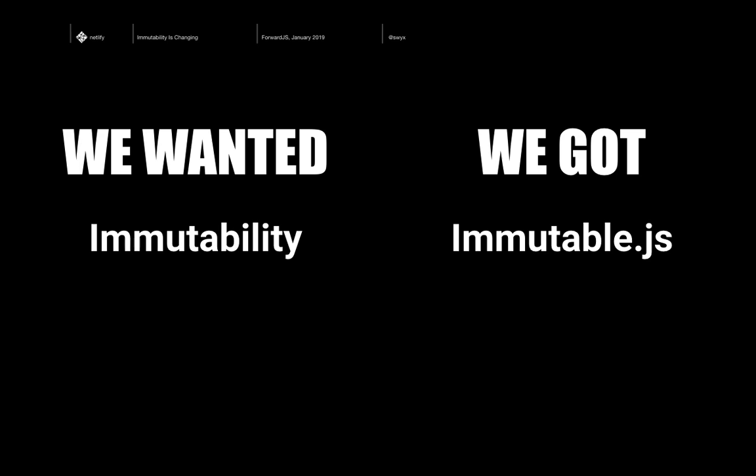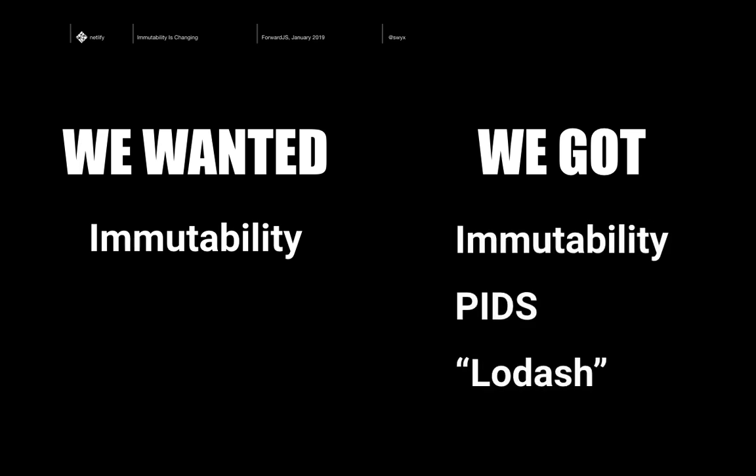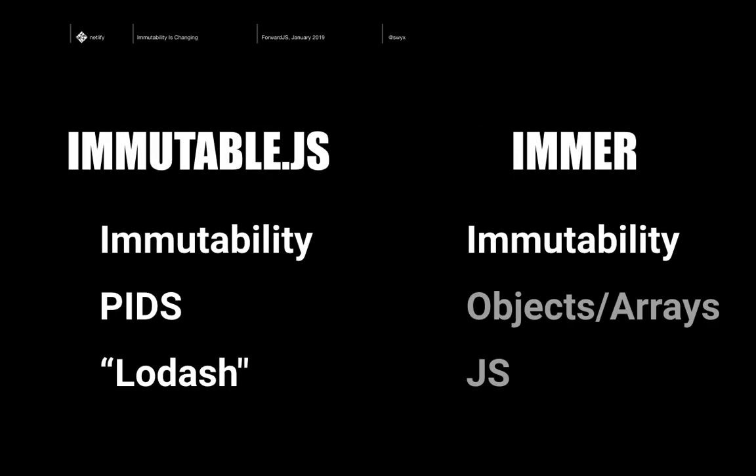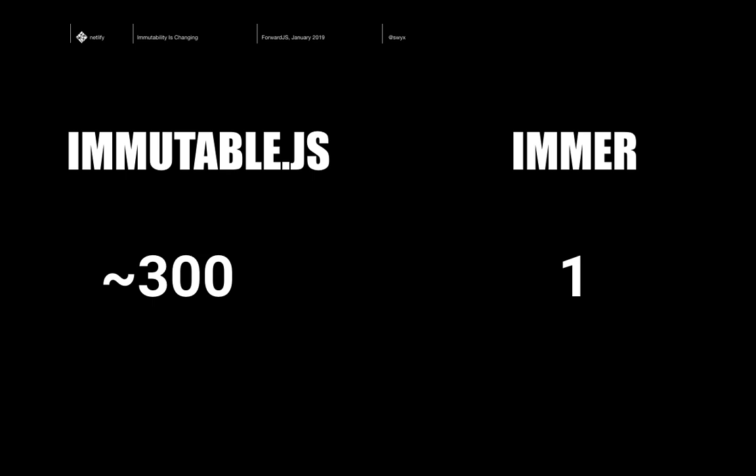We wanted immutability. We were sold on immutability and we got ImmutableJS — but that was a bundle of different things: immutability itself, persistent data structures, and a kind of poor man's Lodash with all those helper APIs. What Immer came along and said was: we'll keep the immutability, but instead of persistent immutable data structures we'll just use regular JavaScript objects and arrays, and instead of Lodash you use all the regular JavaScript you already know. ImmutableJS, by my count, has about 300 different APIs. Immer has one — and you've already memorized it.